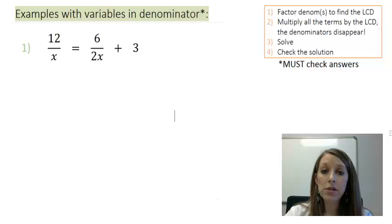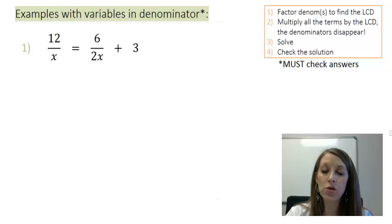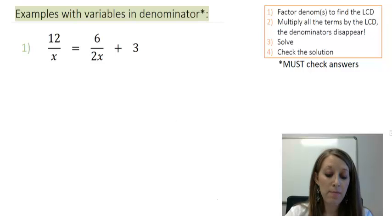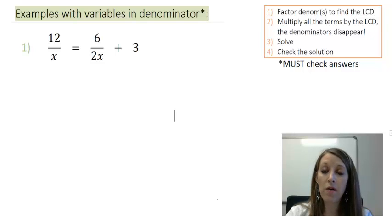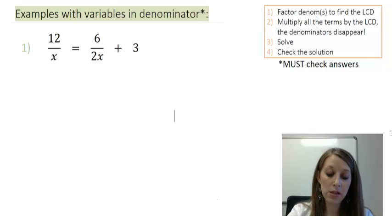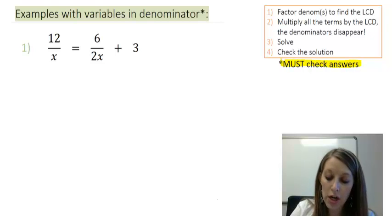I'm going to use the magic trick method because it is a much better method in my mind. It gets rid of those fractions first and foremost, so we do not have to deal with them any longer. The rest of the process is exactly the same as when we just had numerical values in the denominator, with one exception: if there are variables in the denominator, you absolutely must check your answers.